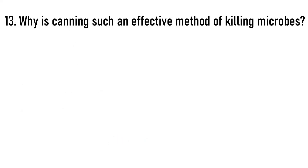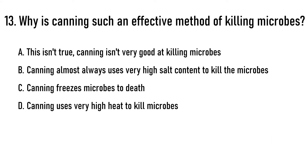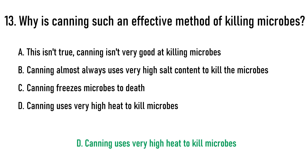Next question: Why is canning such an effective method of killing microbes? Options are: A) this isn't true — canning isn't very good at killing microbes, B) canning almost always uses very high salt content to kill the microbes, C) canning freezes microbes to death, D) canning uses very high heat to kill microbes. The correct answer is option D, canning uses very high heat to kill microbes.